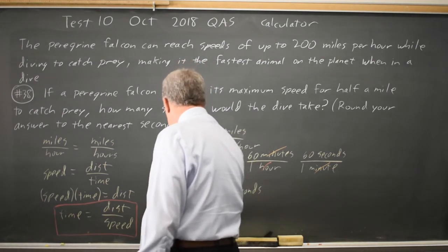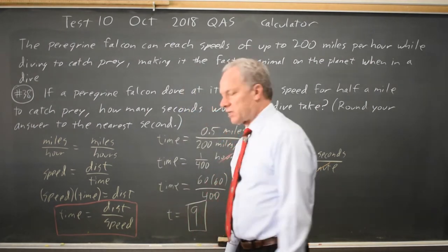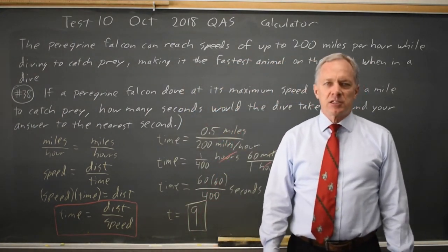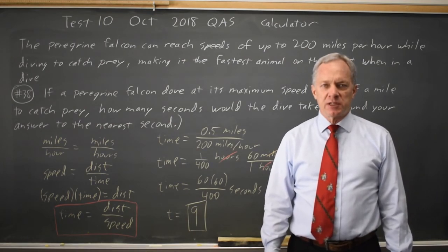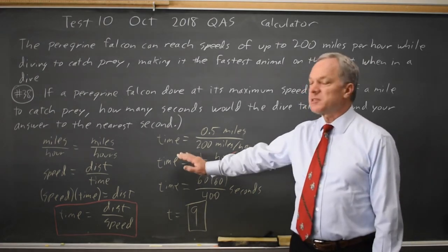And that is time equals 9 seconds. So I would grid in 9. College Board often asks you to convert units frequently, more than once on the same SAT. So I would recommend that you practice this method.